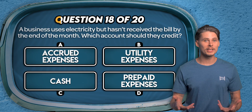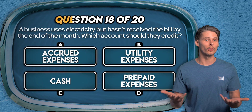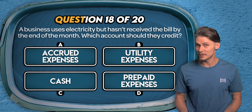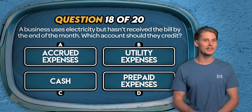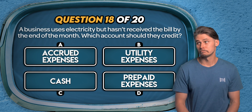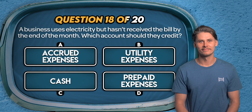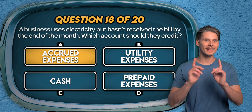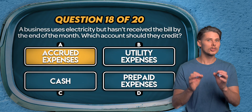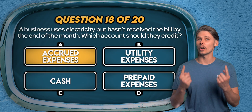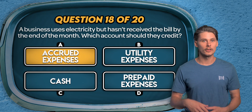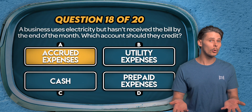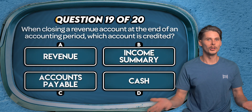Question 18. A business uses electricity but hasn't received the bill by the end of the month — which account should they credit? Accrued expenses, utility expenses, cash, or prepaid expenses? The answer is A — accrued expenses. They haven't received a bill, so they credit accrued expenses to increase liabilities on the balance sheet, reflecting the amount they expect to owe. The other side is a debit to utility expenses to record the cost on the income statement.